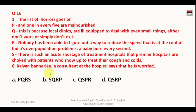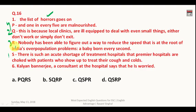Question sixteen starts with 'the list of horrors goes on' — meaning the list of problems. You must find sentences about problematic areas. The first sentence talks about an acute shortage of treatment hospitals. The second extends this with 'this is because'. The third says nobody has figured out a way to reduce the speed. The correct sequence is SQRP, so the answer is B.